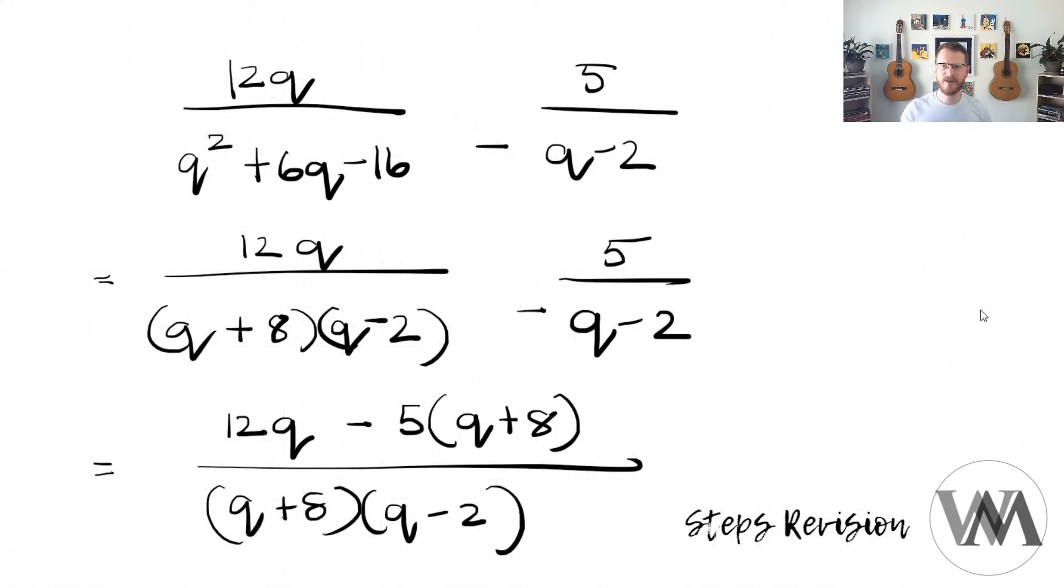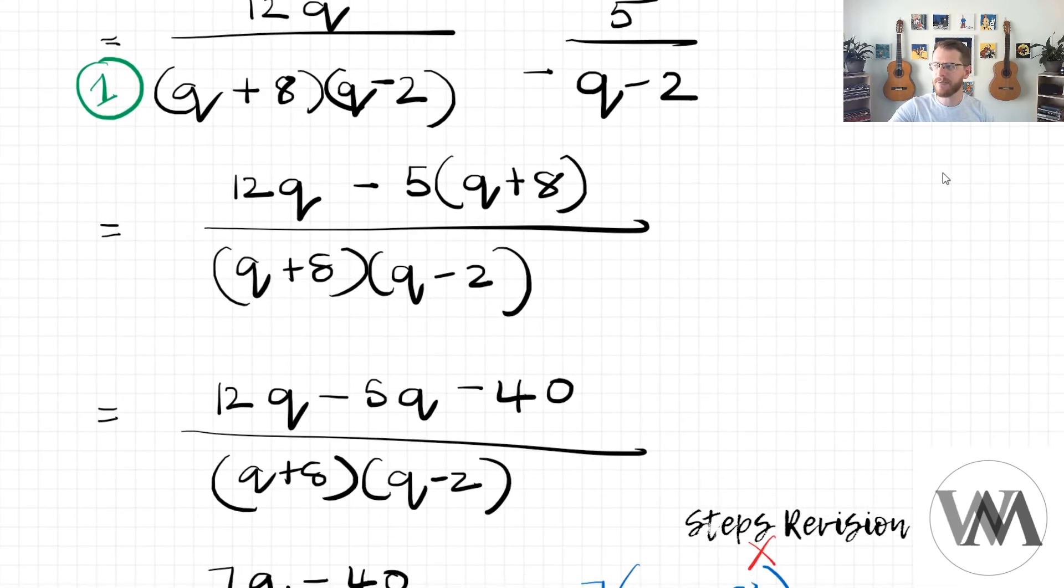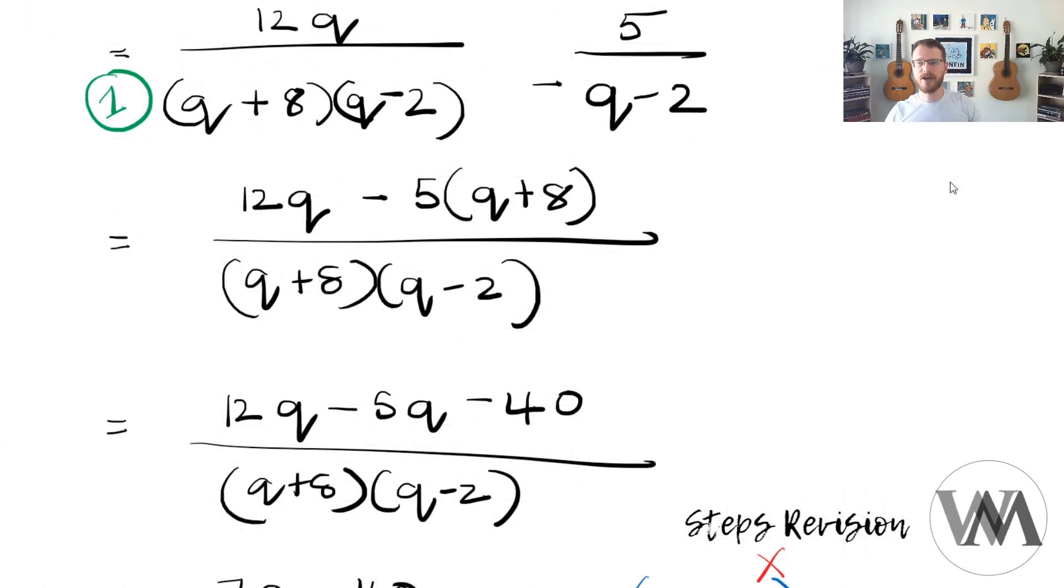So let's just quickly recap our steps. First step is to see if we can factorize the trinomial. Yes, we can. So we've factorized our trinomial in our first step. There we go. The next step is to find the lowest common denominator. Since q minus 2 in the second term is already present in my first term, I'm not going to add it again by multiplying both denominators together. It is already present because I see that q plus 8 and q minus 2 is my lowest common denominator. So 12q would stay the same, but I would multiply my 5 in the second term, the numerator, with only that which is missing from this here. And that would be the q plus 8.